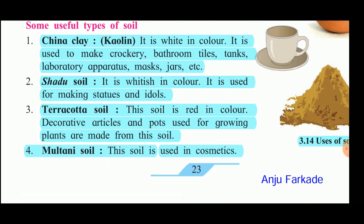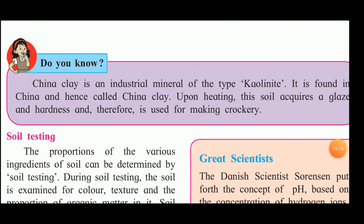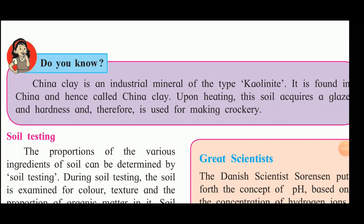Some useful types of soil are: china clay, shadow soil, terracotta soil, and multani soil. China clay is white and used to make crockery, bathroom tiles, laboratory apparatus, and jars. Shadow soil is whitish and used for making statues and idols. Terracotta soil is red and used for decorative articles and plant pots. Multani soil is used for making cosmetics. China clay is an industrial mineral of the kaolinite type, found in China; upon heating it acquires glaze and hardness, making it suitable for crockery.